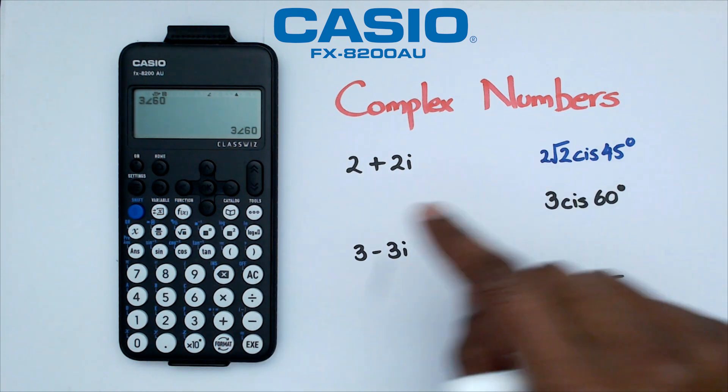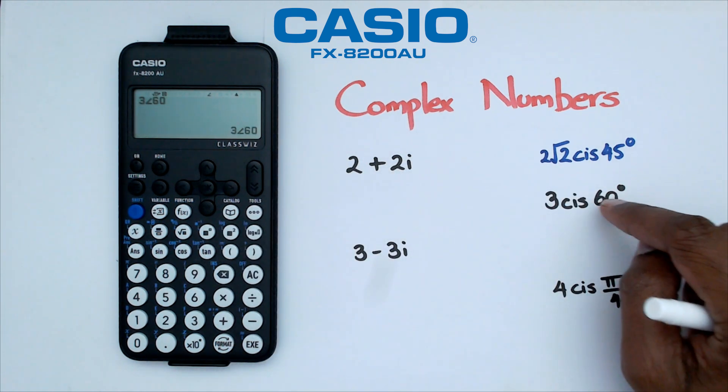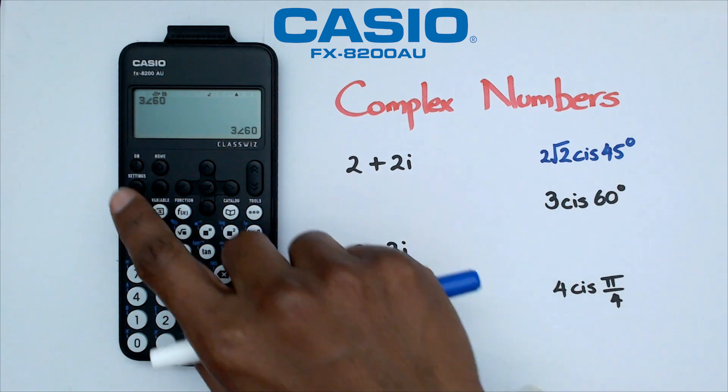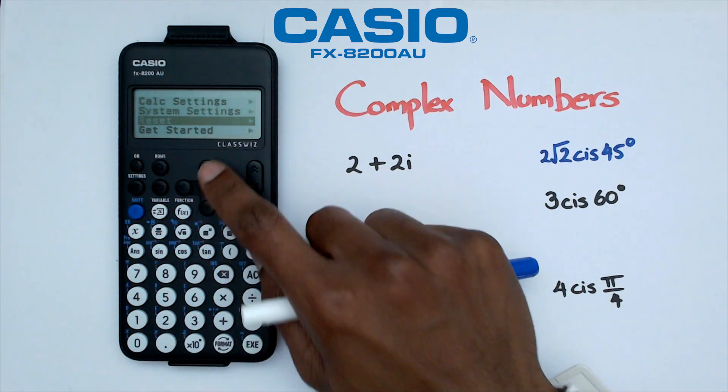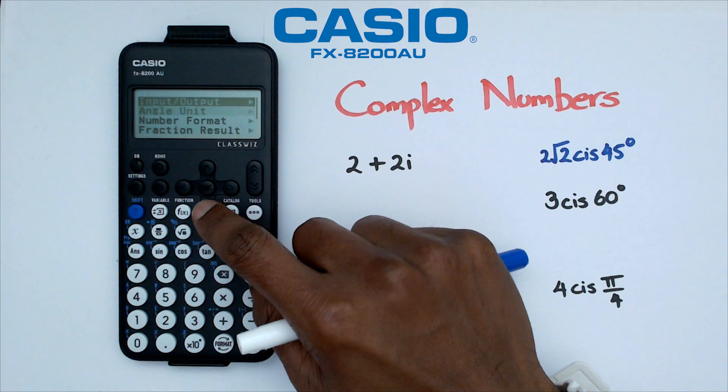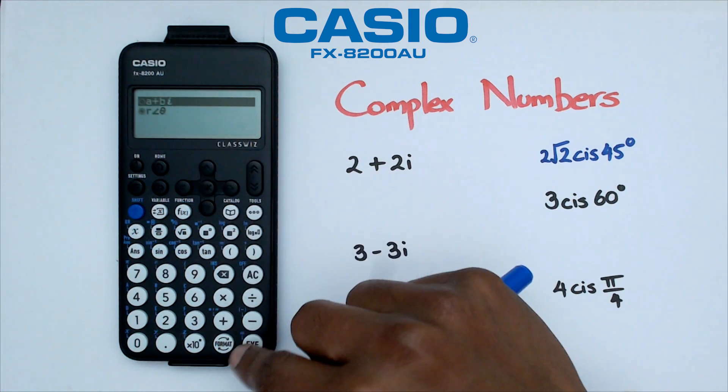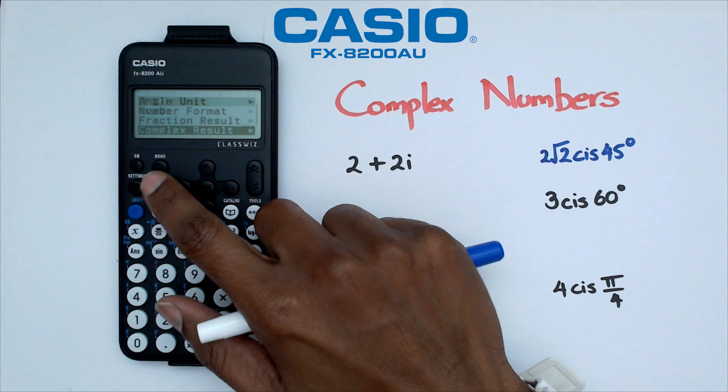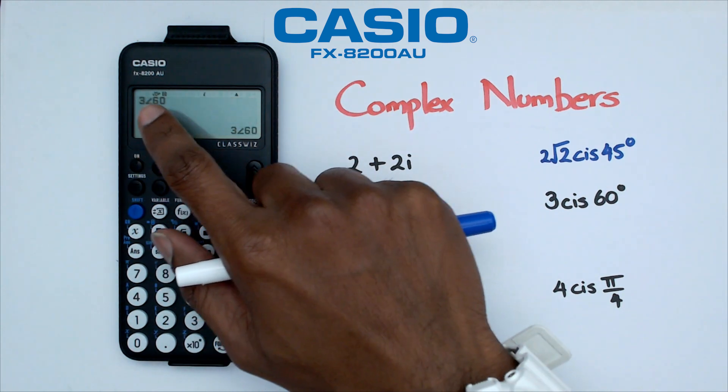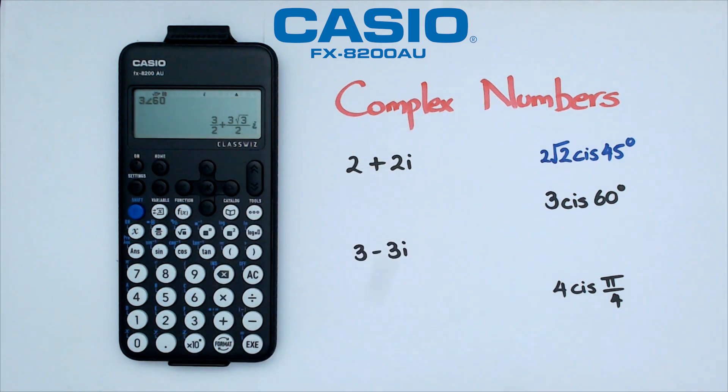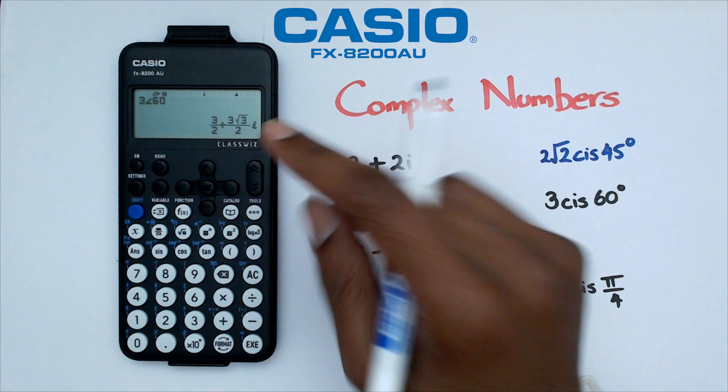Now remember that the calculator was set at polar form, we want to change this to rectangular form. So we're going to click on settings, go down to calc settings, and we're going to go down to complex result, and change it back to rectangular form. So that when we do 3 cis 60, and if we press equals, we're going to get this complex number here.